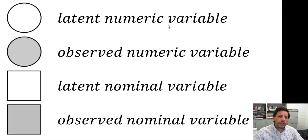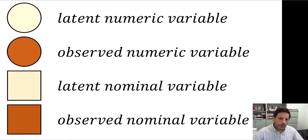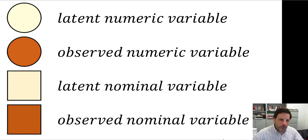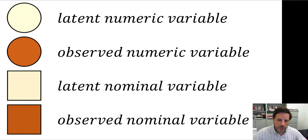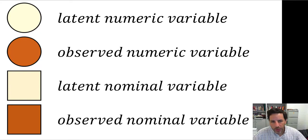Another reason is that a latent variable could be a combination of observed variables. We can also use color. This is not usual, but because we now can use online texts, not only paper texts, we can use color. The limitation of not using color in paper texts is because color is more expensive to print. So there is no reason why we can't use colors instead of just black and white or gray shading. We are going to use light colors for latent variables and darker colors for observed variables.